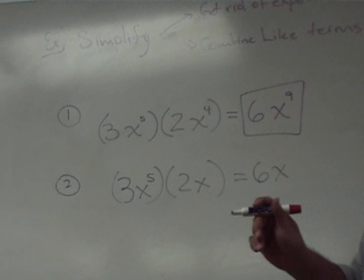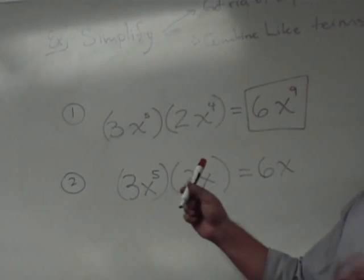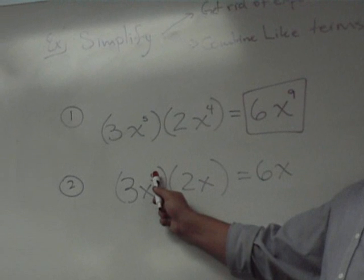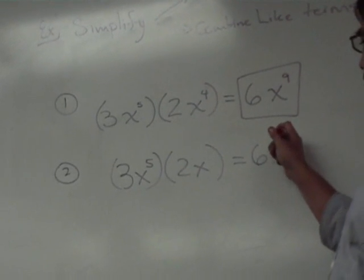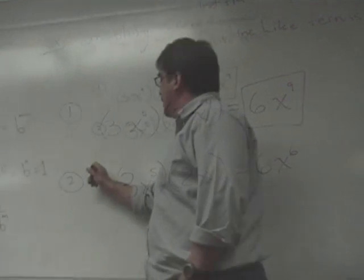The number one mistake students make here is that somehow they want to multiply, like 5 times 1 is 5. Is that a multiplication? You do add the exponent, x to the sixth.